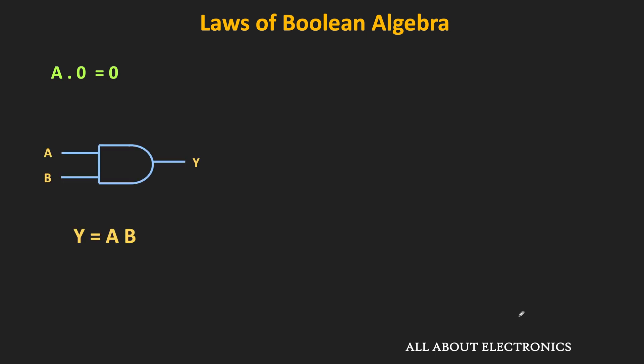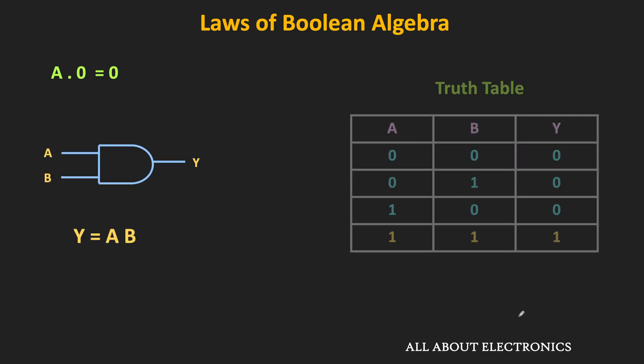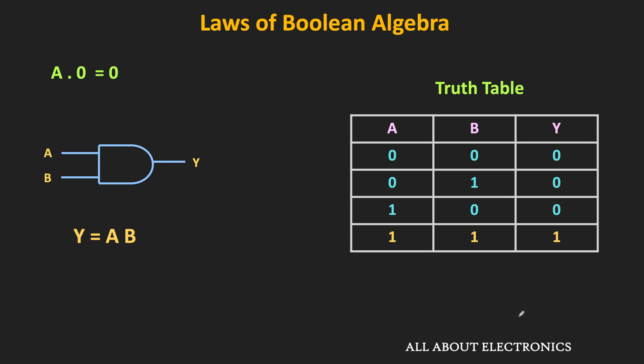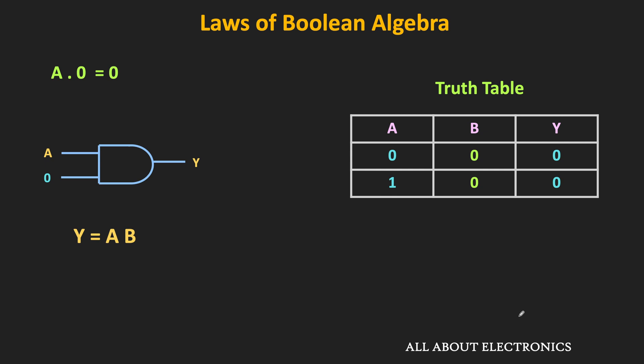We already know about the two-input AND gate, and here is its truth table. For the AND gate, when one of the inputs is 0, then the output is also 0. In this case, input b is always equal to 0. Since one of the inputs is always 0, the output will also become 0. That means the AND operation of a and 0 is equal to 0.